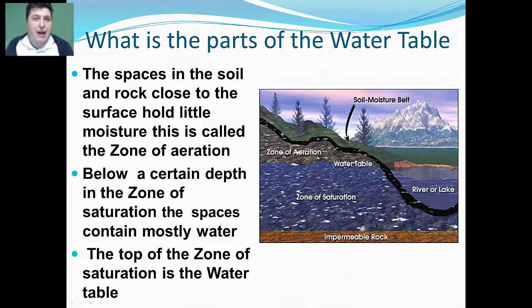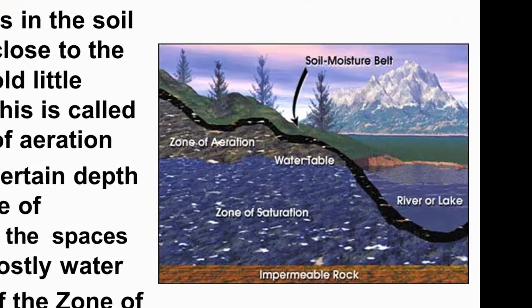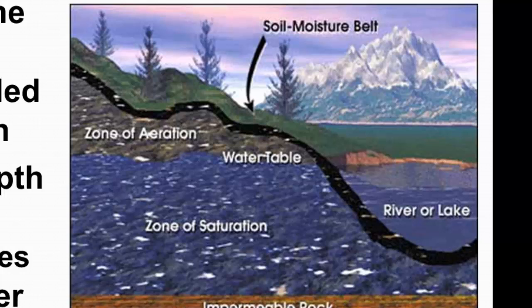As water goes into the ground, it creates what we call a water table. At the top, where we have spaces between soil and rock near the surface without much moisture, this is going to be called the zone of aeration.